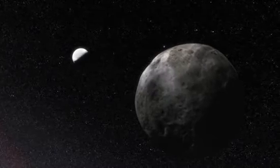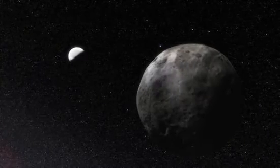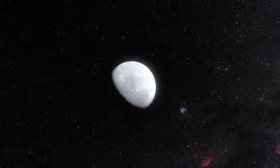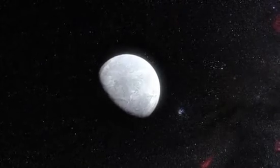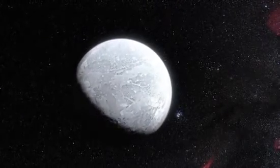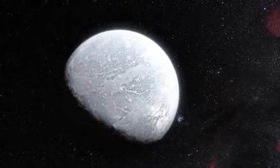Eris seems to be a rocky body surrounded by a thick mantle of ice. The dwarf planet turns out to reflect almost all of the light that falls on it. Its surface is even brighter than fresh snow on Earth.